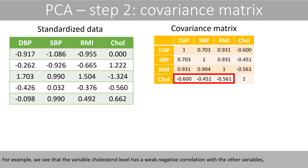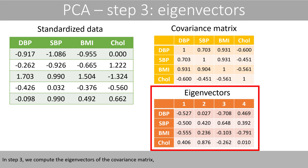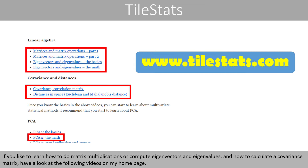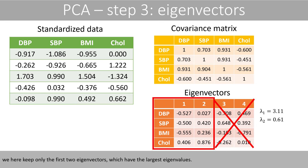The second step in PCA involves the calculation of the covariance matrix. Remember that the covariance matrix computed on standardized data will be equal to the correlation matrix. For example, we see that the cholesterol level has a weak negative correlation with the other variables, whereas the BMI has a strong positive correlation with the systolic and diastolic blood pressure. In step 3, we compute the eigenvectors of the covariance matrix and the corresponding eigenvalues. Since we like to combine these four variables into two new variables, we keep only the first two eigenvectors with the largest eigenvalues.